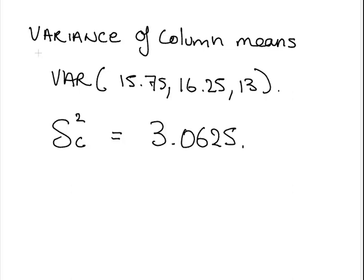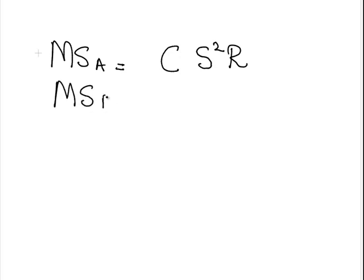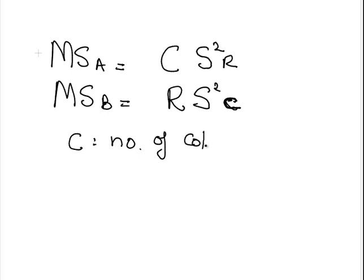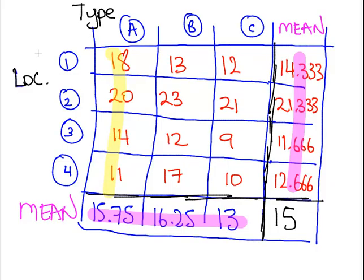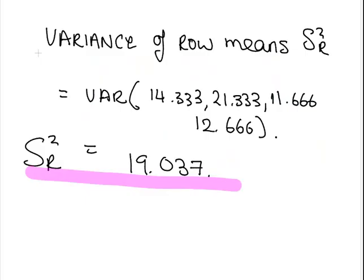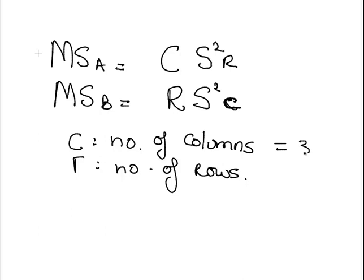So far, so good. Why do we need these? Essentially, the mean square for factor A is as follows: it is C times S squared R. And likewise, the mean square for factor B is R times S squared C. So C is the number of columns, and R is the number of rows. Now, if you look back at our example here, there are four rows and three columns. So C is equal to three, and the number of rows is equal to four.